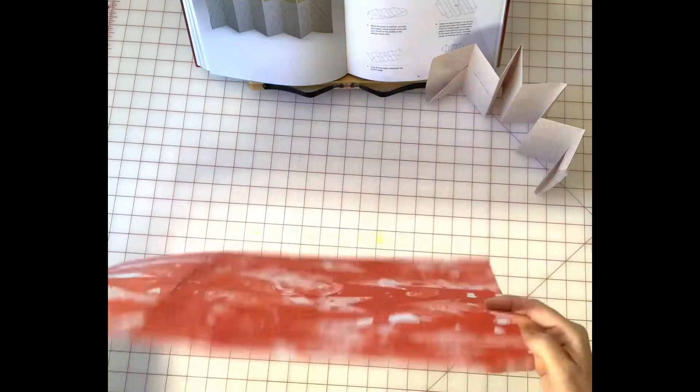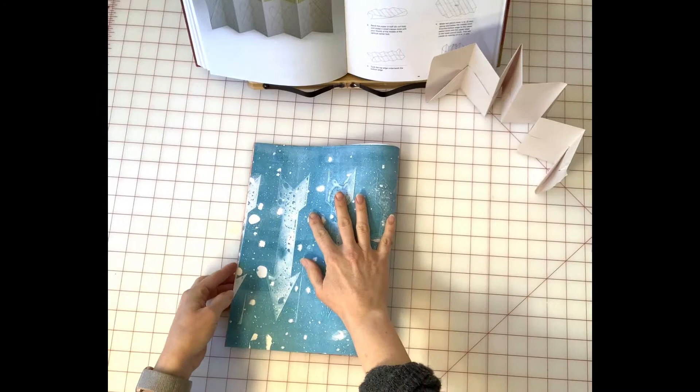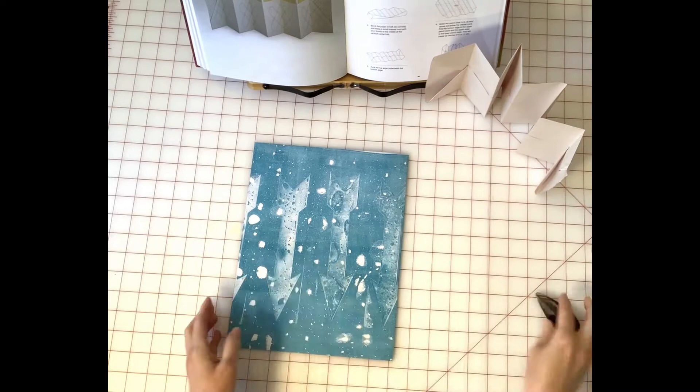These are the inserts and you'll see I've got a sheet of 11 by 17 paper. I'm going to fold this piece into an eight panel accordion using the instructions from the art of the fold.